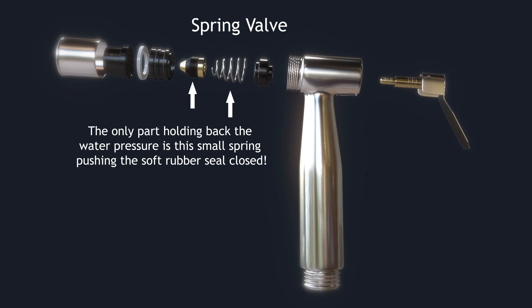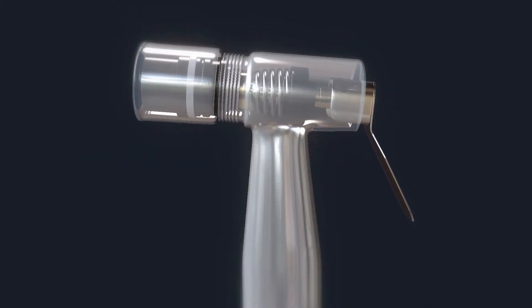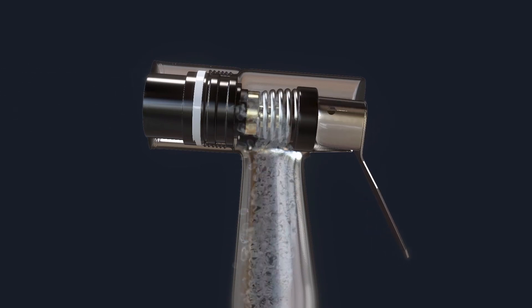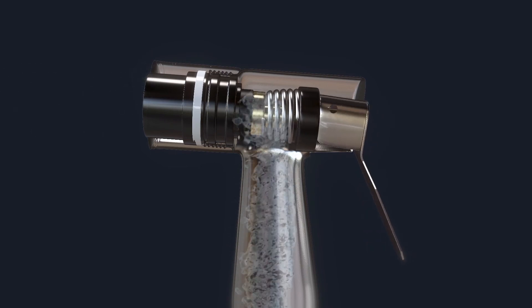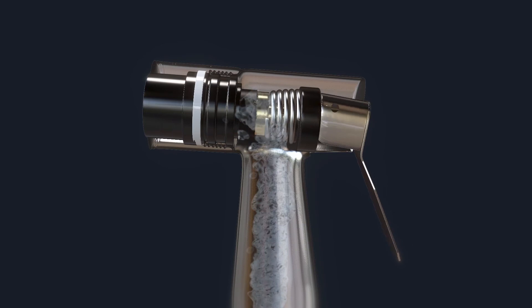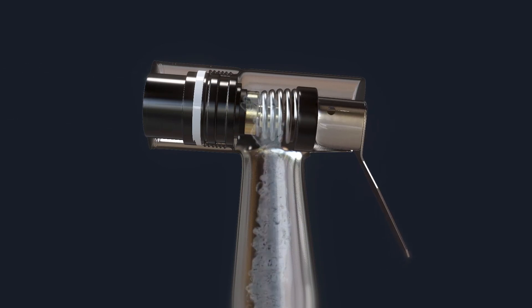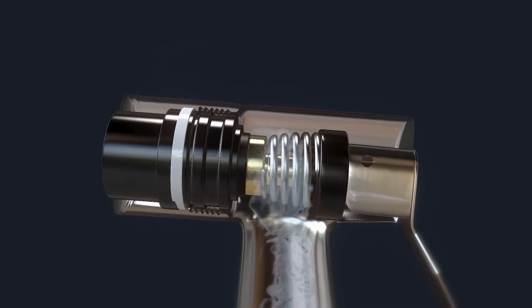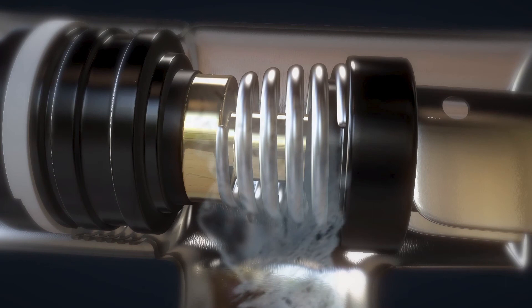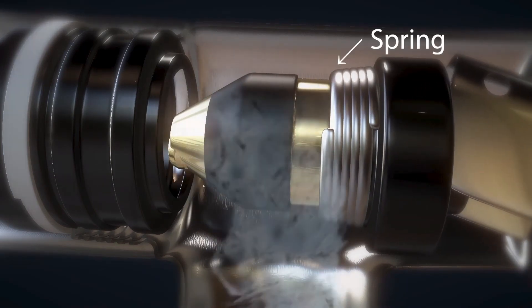Here's how a spring valve inside a kitchen sink sprayer looks and works. As you can see, the spring is pushing the rubber seal shut when the button is released. This type of valve can have many problems, because the only thing holding back the water pressure from flooding your home is this spring pushing the soft rubber seal closed.